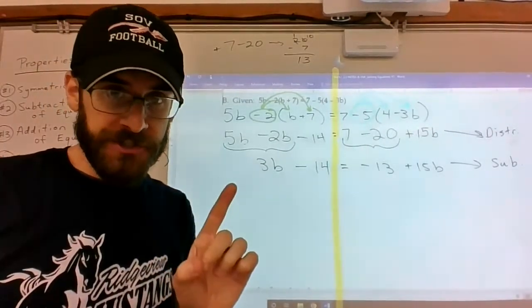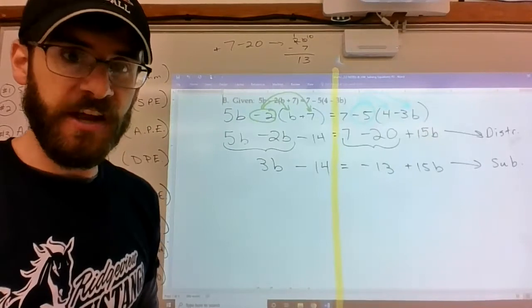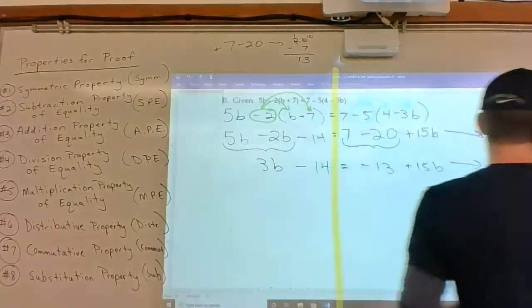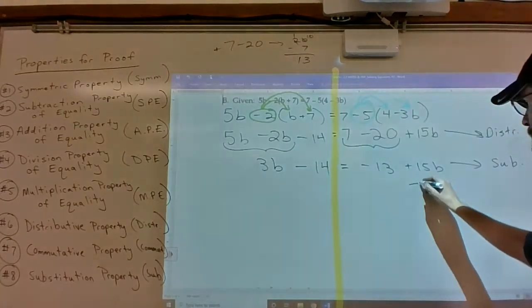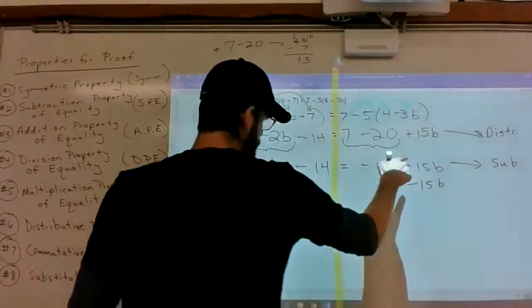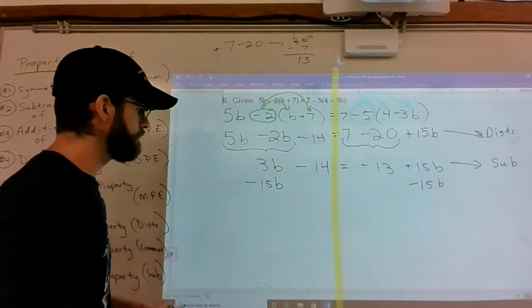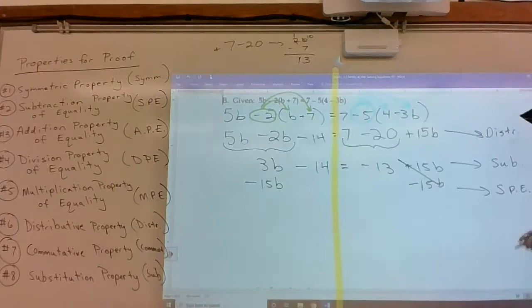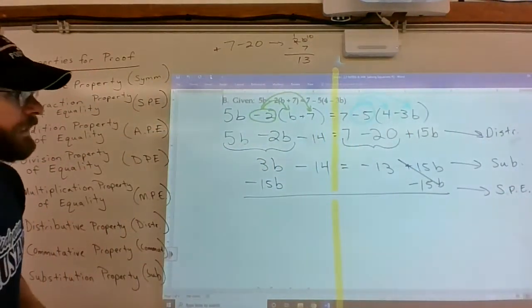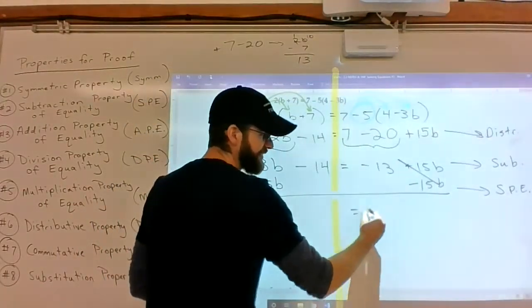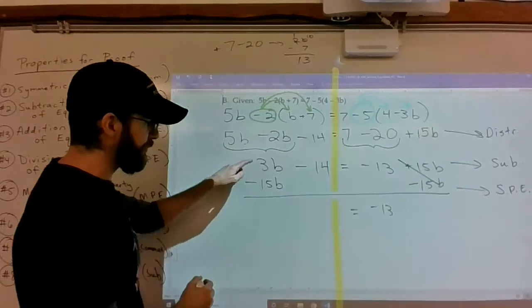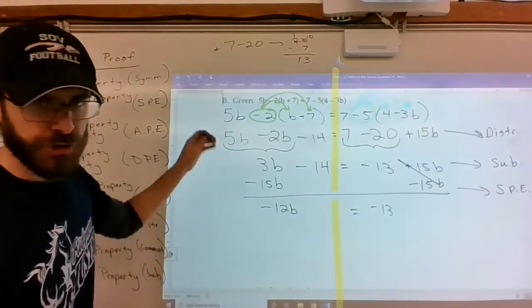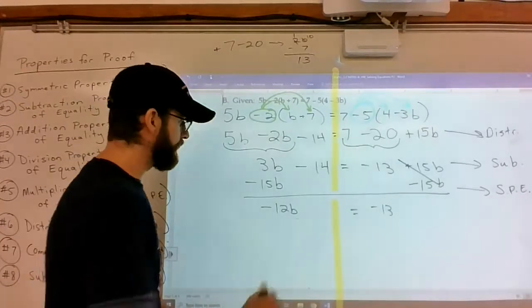Now it looks like our first example on this assignment, which was the idea of I want to create one b term on the left. So I see a plus 15b. I'm going to subtract that 15b from both the right-hand side and the left-hand side. Subtraction property of equality. So now on the right-hand side, I just got negative 13 plus 0. On the left-hand side, I have 3 minus 15, which is going to be negative 12b. And then minus 14.